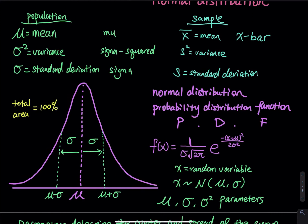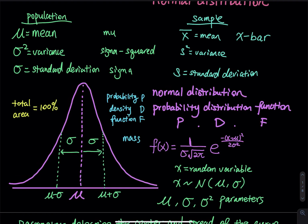In this probability density function, there are a few different names. Some people call it the probability density function (PDF). In some textbooks, they use the word mass — probability mass function (PMF) — but they mean the same thing. In elementary statistics, the textbook will likely use density function or distribution function; they are pretty much the same thing.